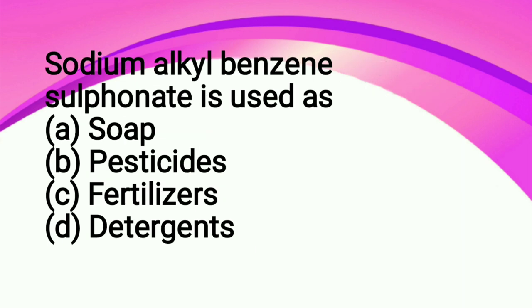Sodium alkyl benzene sulfonate is used as: option A soap, option B pesticide, option C fertilizer, option D detergent. The correct answer is option D detergent.